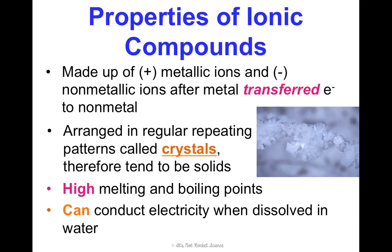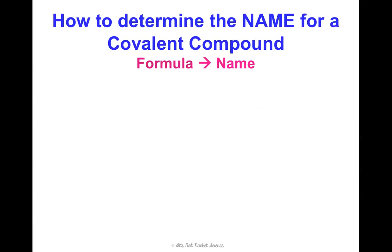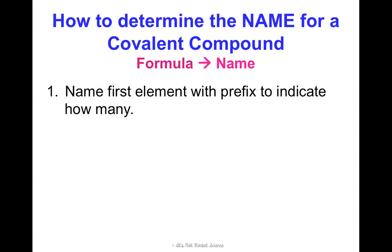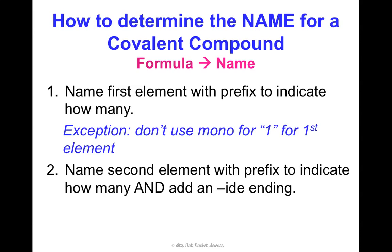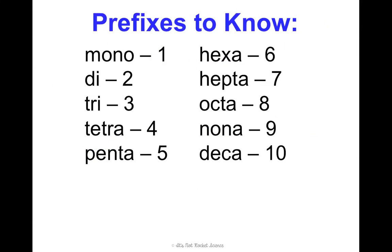The last thing we need to learn about covalent compounds, like we did with ionic, is the naming — and luckily it's way easier. To determine the name for a covalent compound from a formula: first, name the first element with a prefix to indicate how many there are; the only exception is if there's only one, we don't use 'mono' on the first element. Then name the second element with a prefix to indicate how many and add the '-ide' ending. No crisscross, none of that — because there's no charge since they're sharing, not giving and taking. The prefixes are: mono (1), di (2), tri (3), tetra (4), penta (5), hexa, hepta, octa, nona, deca.